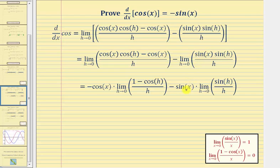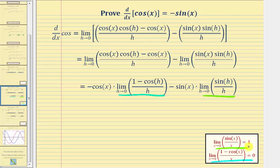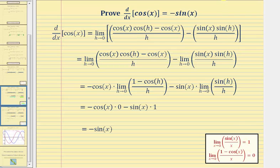Factoring out sine x from the second limit gives us sine x times the limit as h approaches zero of sine h divided by h. We need to recognize two special limits here: the limit as h approaches zero of one minus cosine h divided by h equals zero, and the limit as h approaches zero of sine h divided by h equals one. Therefore, we have negative cosine x times zero minus sine x times one, which simplifies to negative sine x.